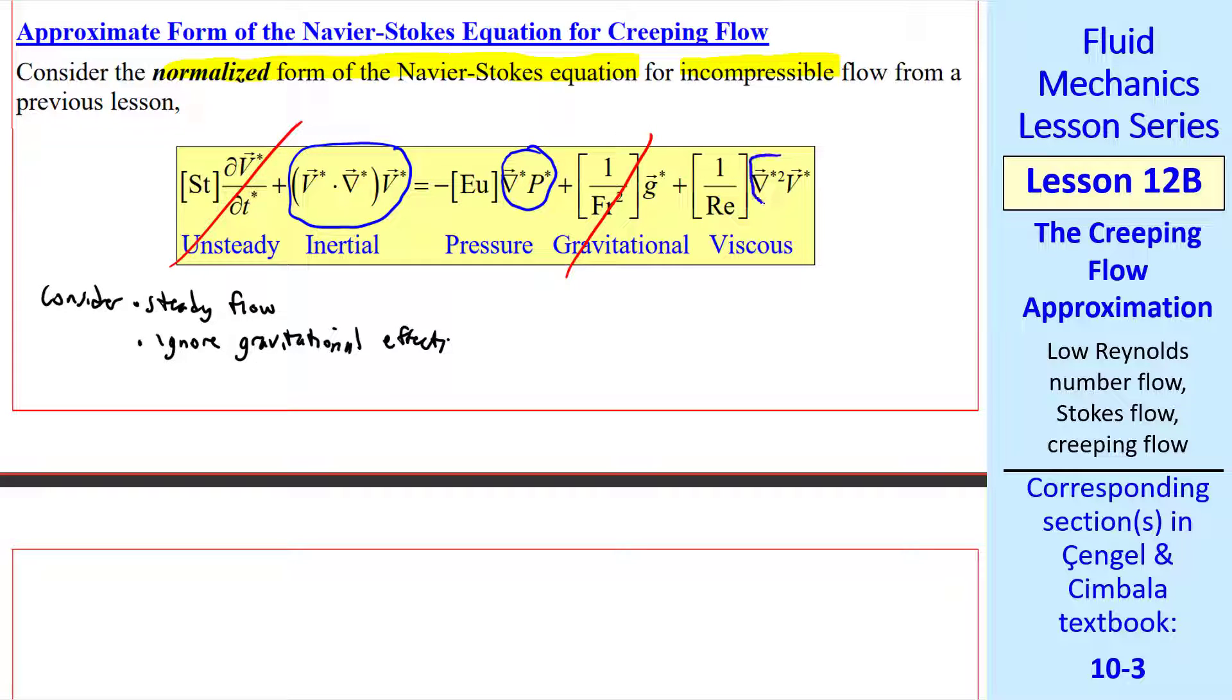And as you may recall from a previous lesson, all of these circled terms, if they're properly normalized, are order of magnitude one. When the Reynolds number is very small, since Reynolds number is in the denominator, the viscous term is huge. Compared to the inertial term, which is of order one, this term can be orders of magnitude larger. So this inertial term can also be neglected.